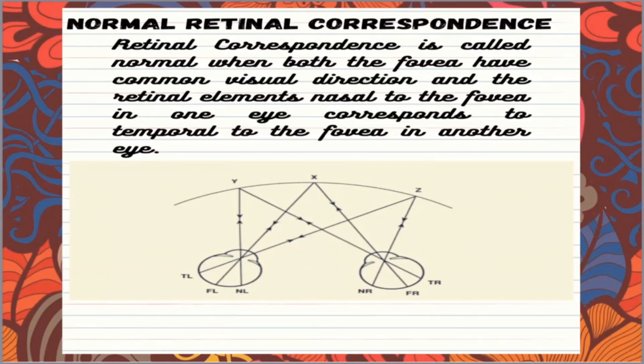So look at this point X. This point X will have single image. Now what will happen if instead of corresponding points, points which are non-corresponding get stimulated? Will images be formed? Yes.